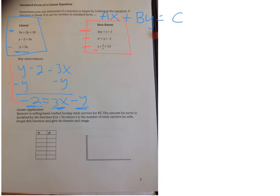Let's take a look down at the bottom. Spencer is selling handcrafted hockey stick carriers for $5. The amount he earns is modeled by the function f(x) equals 5x, where x is the number of stick carriers he sells. Graph this function and give its domain and range. We need labels on our graph. We know this is x and this is y. Is there anything in the statement that can help with the label? It says x is the number of stick carriers he sells, so this is going to be the number of stick carriers, or number of bags.